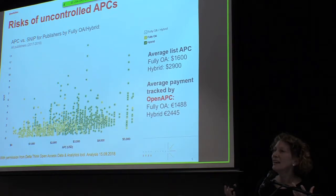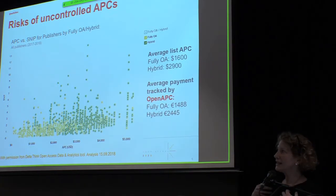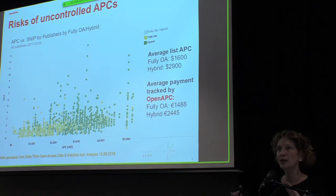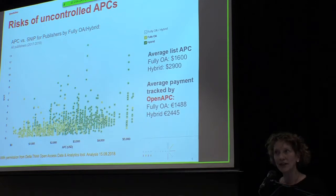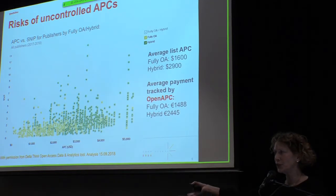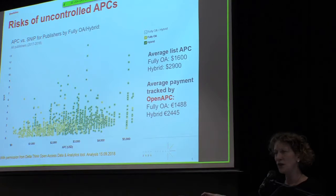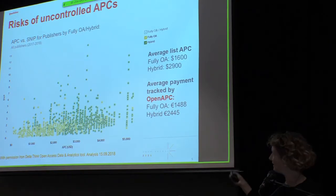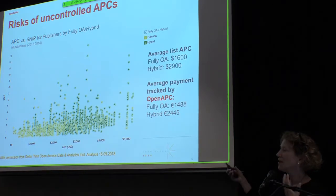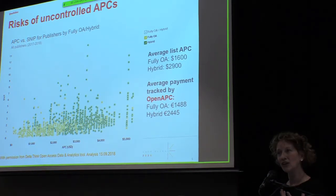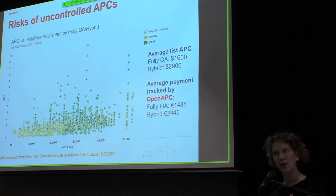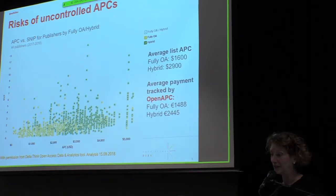This is a call to action for libraries. We want to get out in front of this — why are our researchers paying so much more to publish in a hybrid journal? Those costs need to come down. There's no justification for this higher cost if we're looking at quality as an indicator.